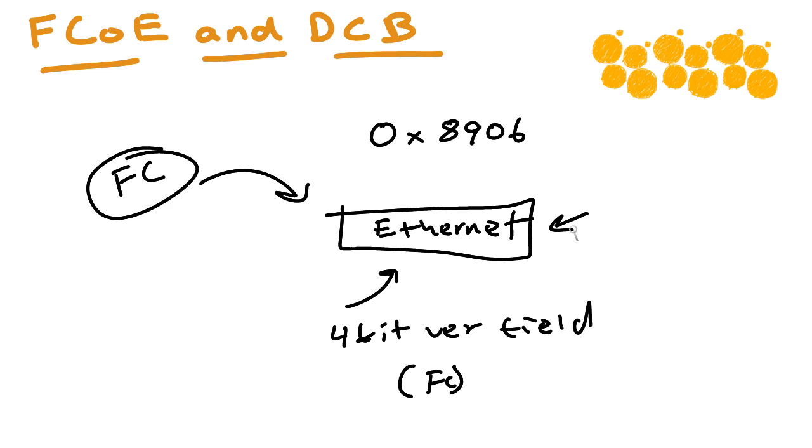Everything else in the Ethernet frame is what we would expect, like the source MAC address, the destination MAC address, the IEEE 802.1Q tag would be in there. Everything else would be normal.